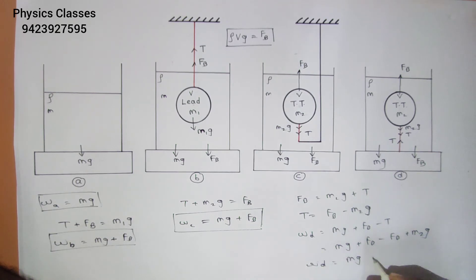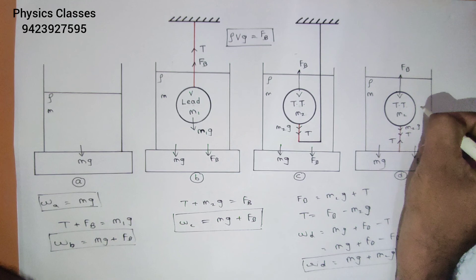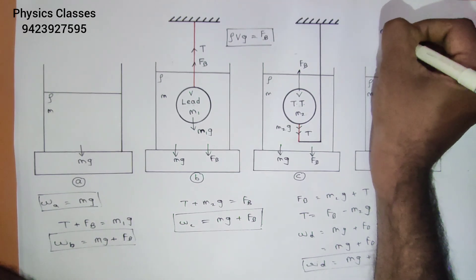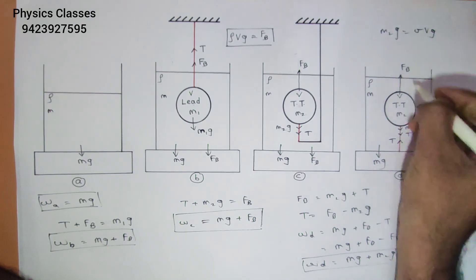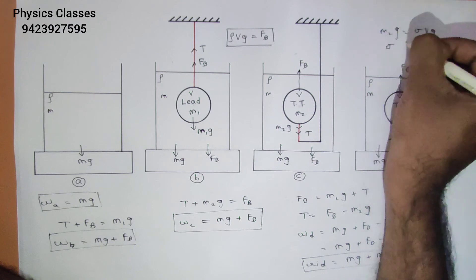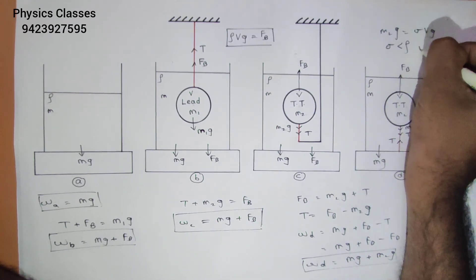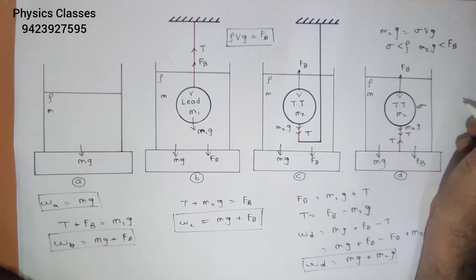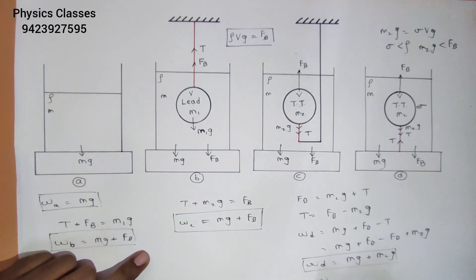Now FB = rho*V*g, and letting sigma be the density of the table tennis ball, M2g = sigma*V*g. Since the density of the table tennis ball is less than the density of water, M2g is less than FB. Therefore WD will be less than WB and WC.